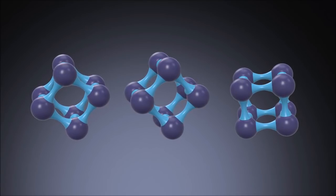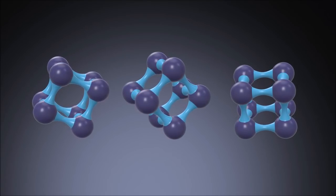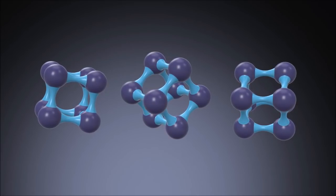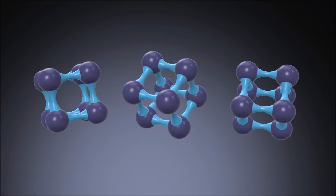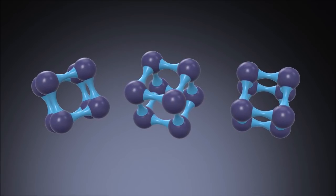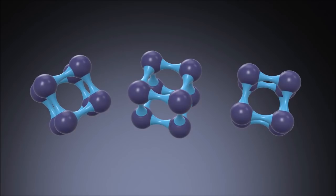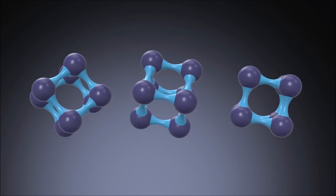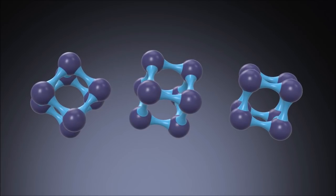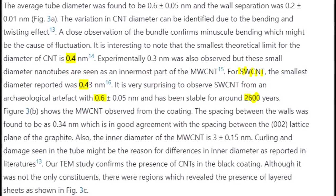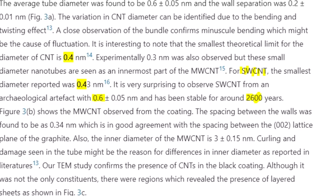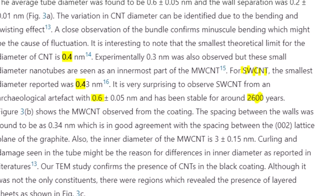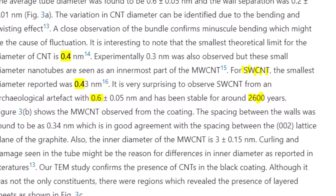The analysis revealed the presence of single and multi-walled carbon nanotubes and layered sheets in the coating. The average diameter of single-walled carbon nanotubes found to be about 0.6 plus or minus 0.05 nanometers. This is the lowest among the single-walled carbon nanotubes reported from artifacts so far and close to the theoretically predicted value of 0.4 nanometers.